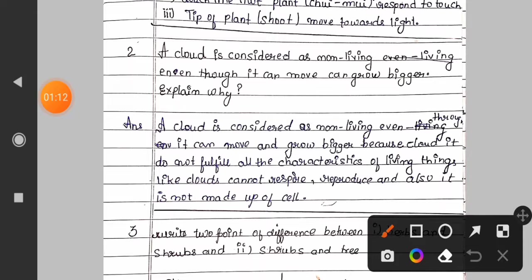Question number two: A cloud is considered as non-living even though it can move and can grow bigger. Explain why? Answer: A cloud is considered as non-living even though it can move and grow bigger because cloud does not fulfill all characteristics of living things. Like cloud cannot respire, reproduce, and also it is not made of a cell.